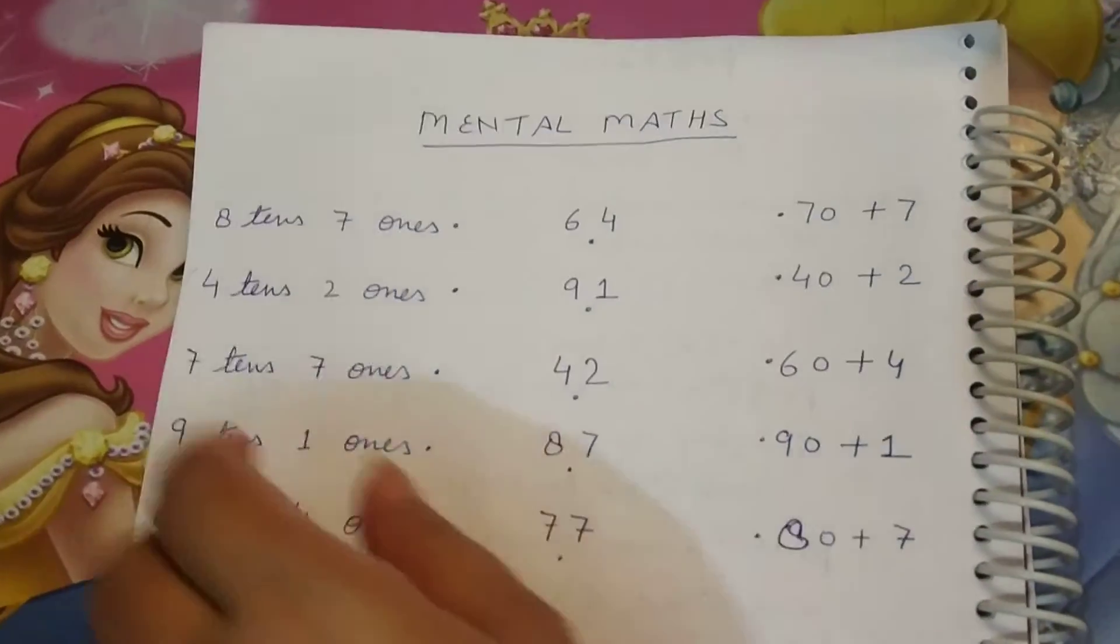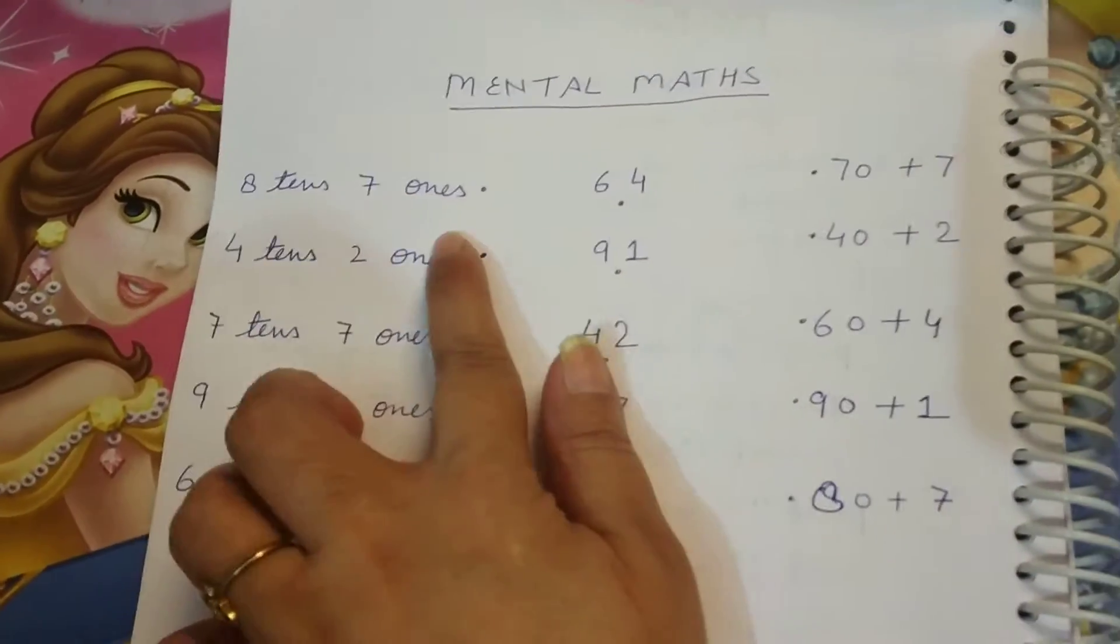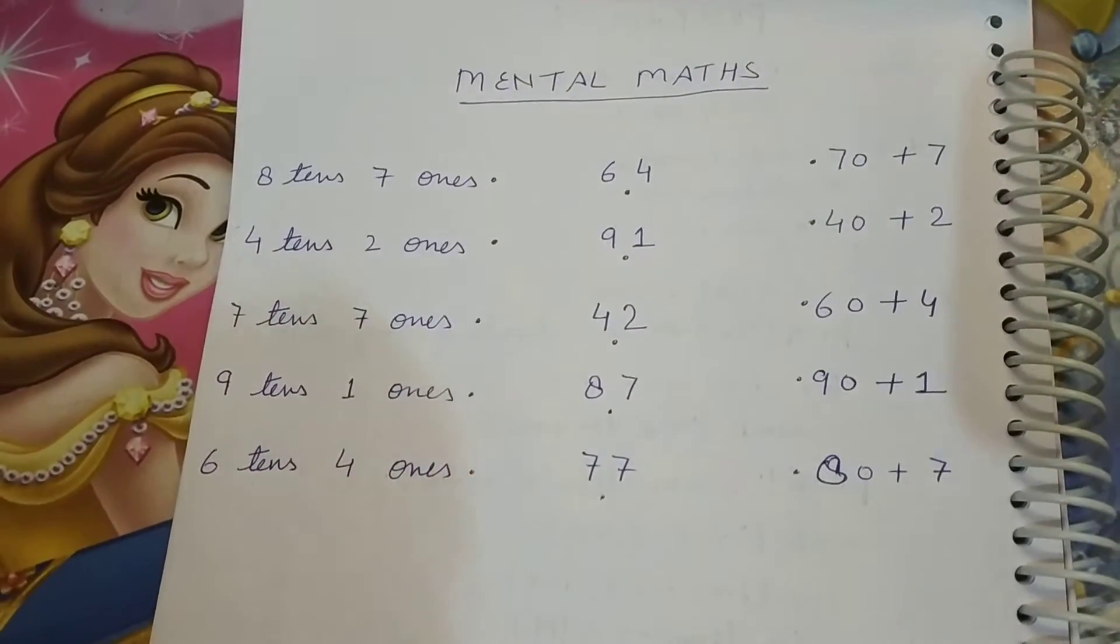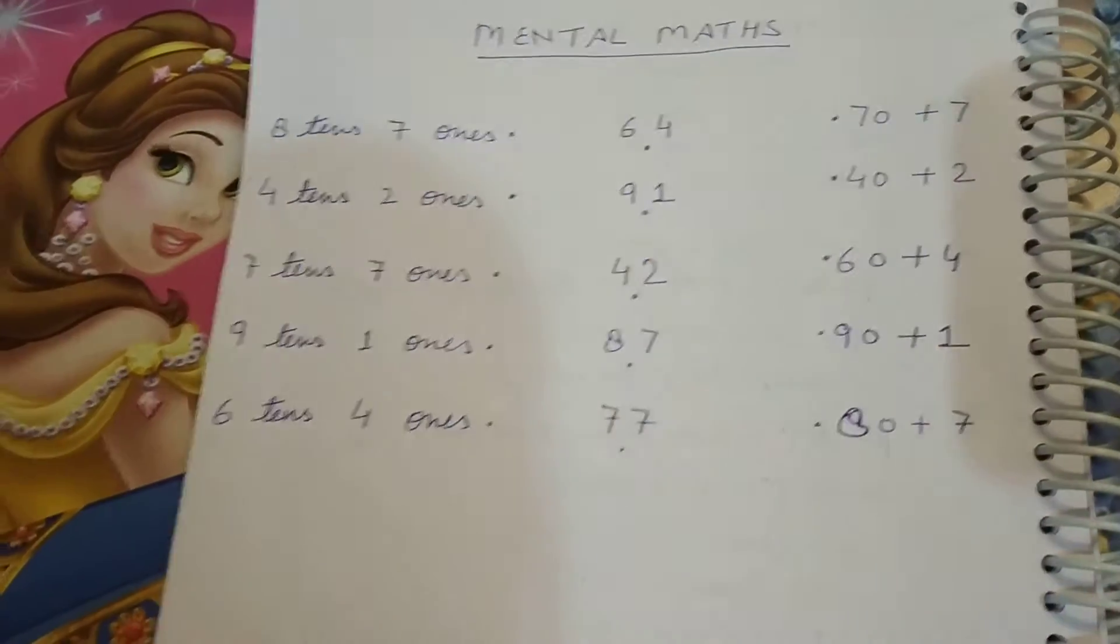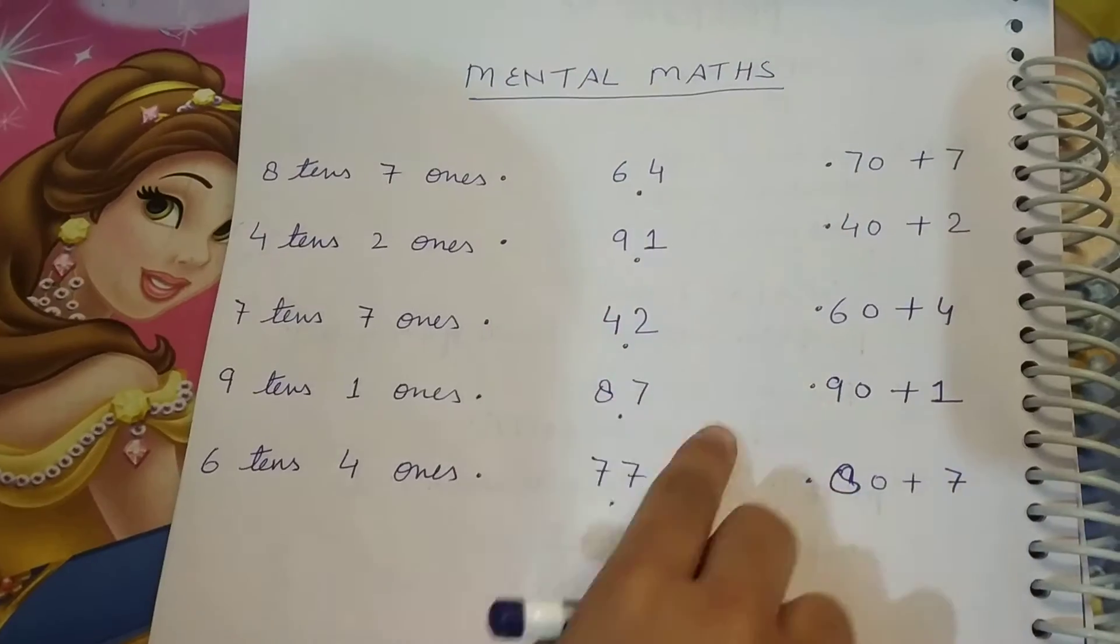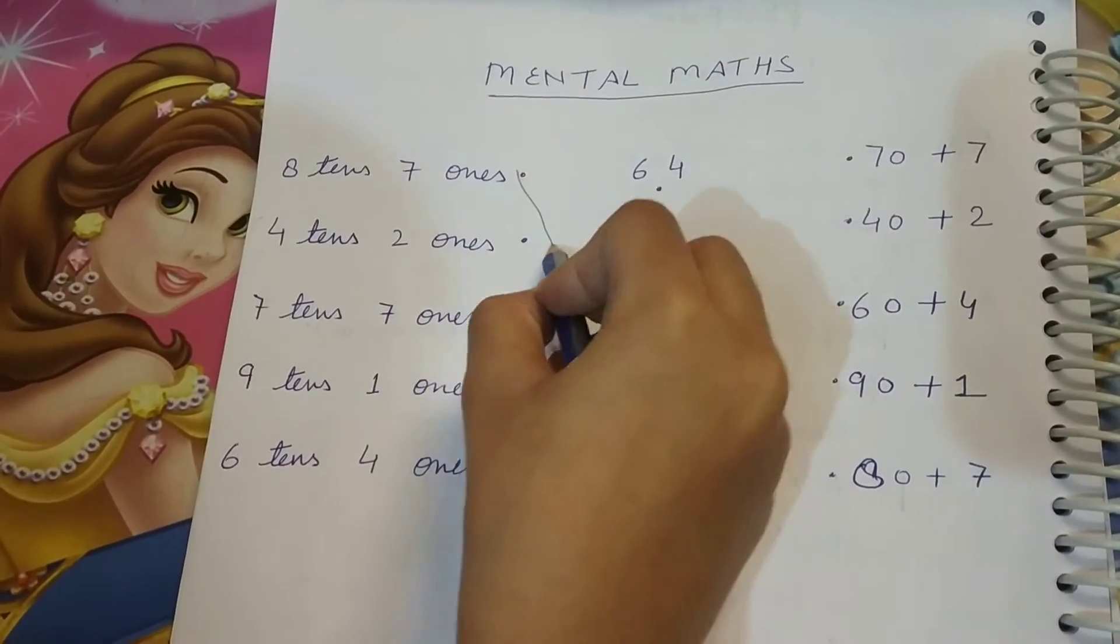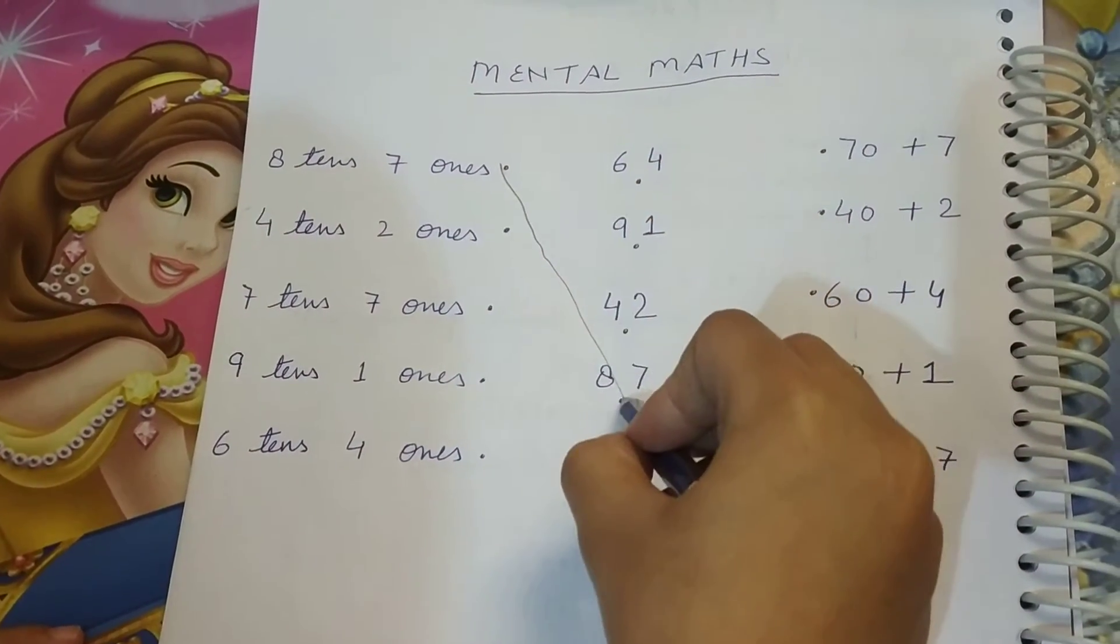Let's start. We have to match this. Eight tens and seven ones. What's that? 87. What's this line? This line. Match it. Good.